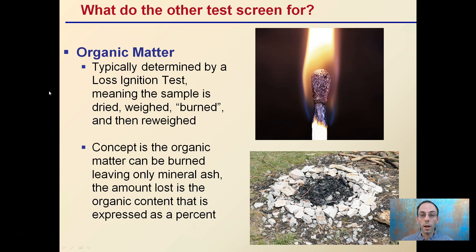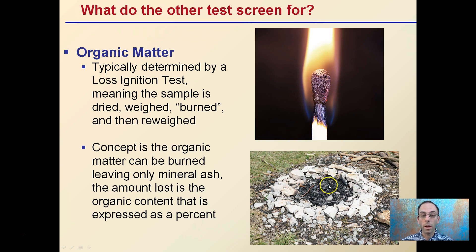Organic matter can be added to a lot of standard nutrient tests and is determined by what's called a loss ignition test. This means the sample is dried, then the lab will weigh it, literally burn it, and then re-weigh it. The organic matter is burned off, leaving only mineral ash left. The amount that's lost is the organic content, and that's expressed as a percentage. That's just a little background on how the organic matter procedure is typically done for that number you see on the soil test.